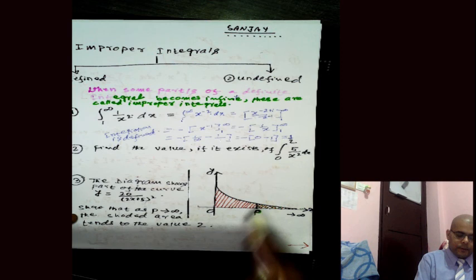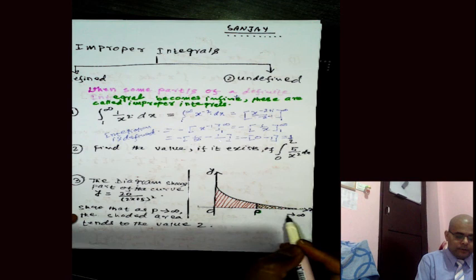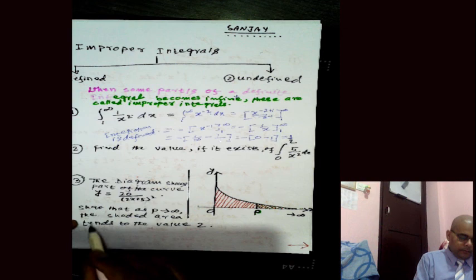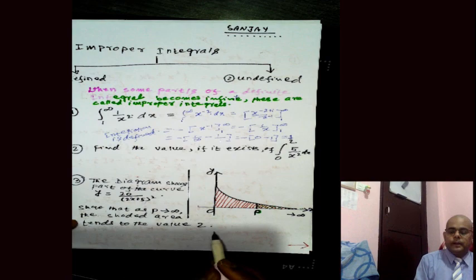As p tends to infinity, we first integrate the function from x = 0 to p, and then let p tend to infinity — that is, as x goes towards infinity. We need to show that the shaded area tends to the value 2. The process is similar to what we have been doing, except we are dealing with improper integrals where the gap between the x-axis and the curve is very small at large x values, making it possible to sum the areas up to infinity.